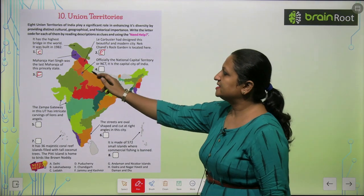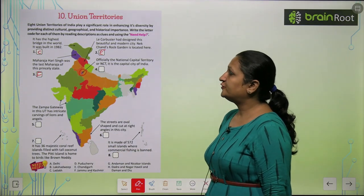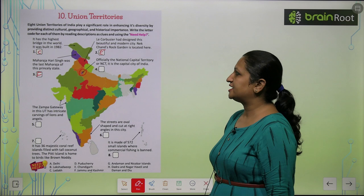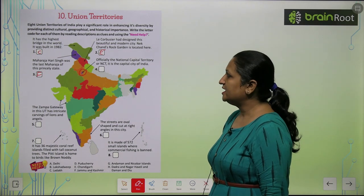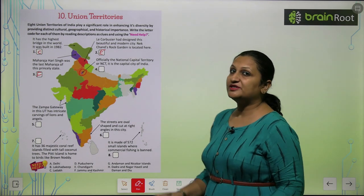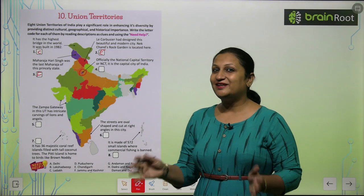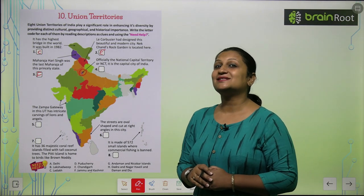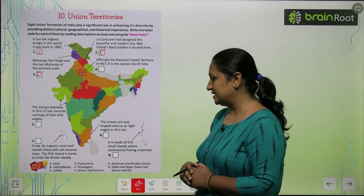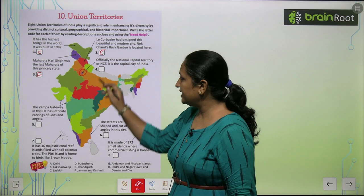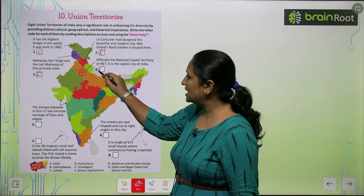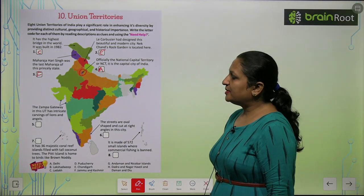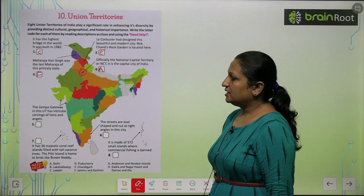Now see this place. Officially the National Capital Territory or NCT, it is the capital city of India. Capital toh sabko pata hai — kya hai? It is New Delhi. So New Delhi ka answer hai A — aap yahaan peh A likhenge.